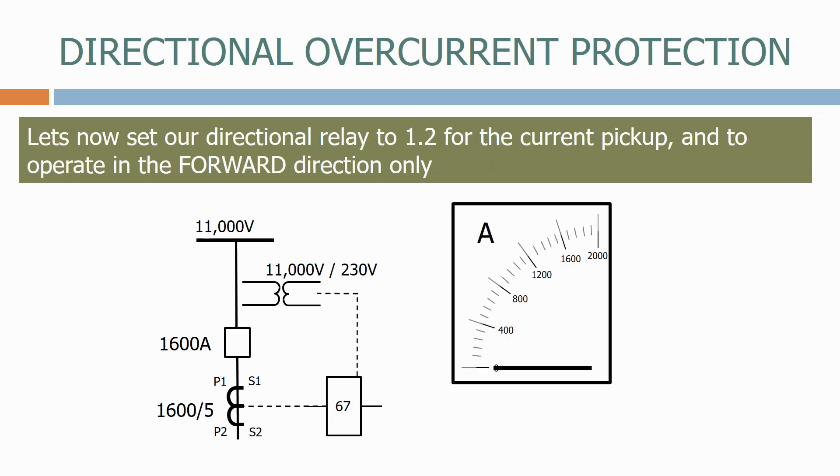Let's now set our directional relay to 1.2 for the current pickup, and to operate in the forward direction only.